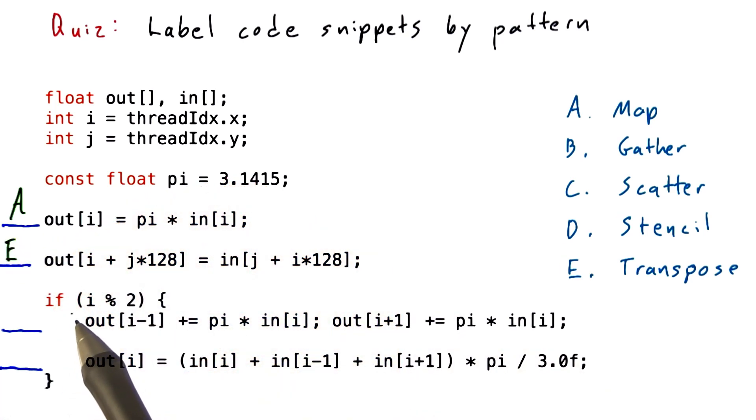Now this next code, as I said, I put a guard around, right? Only the odd numbered threads are going to execute this. So that rules out a map. It's not one-to-one. And that also rules out a transpose operation, which is also one-to-one.